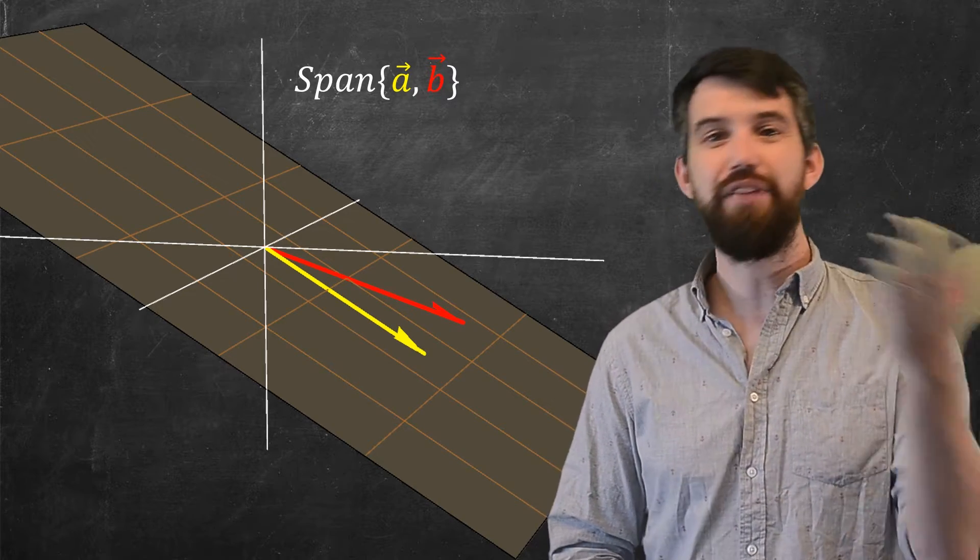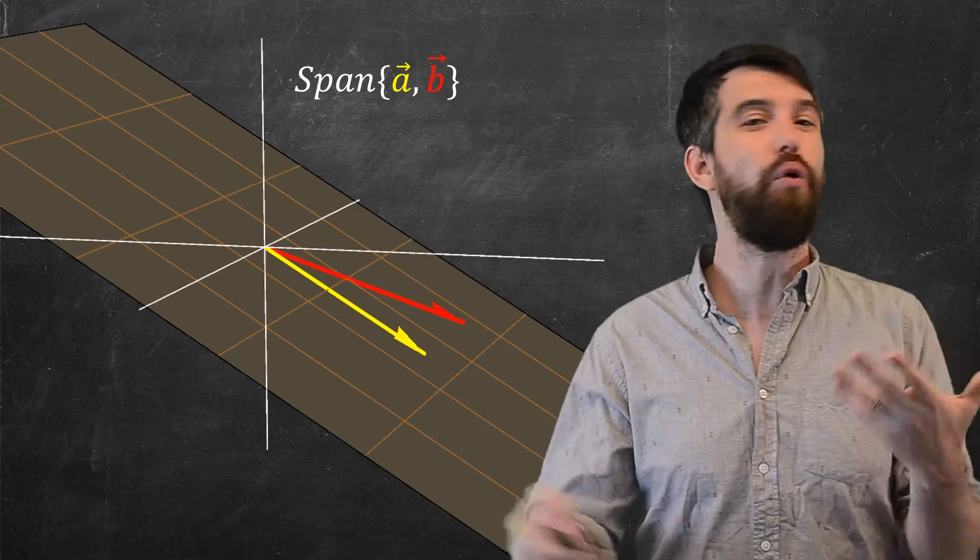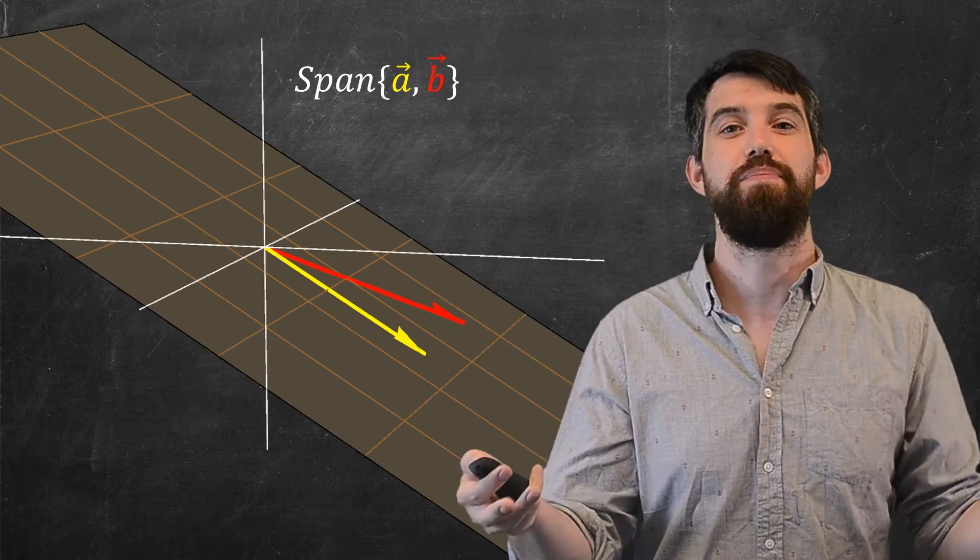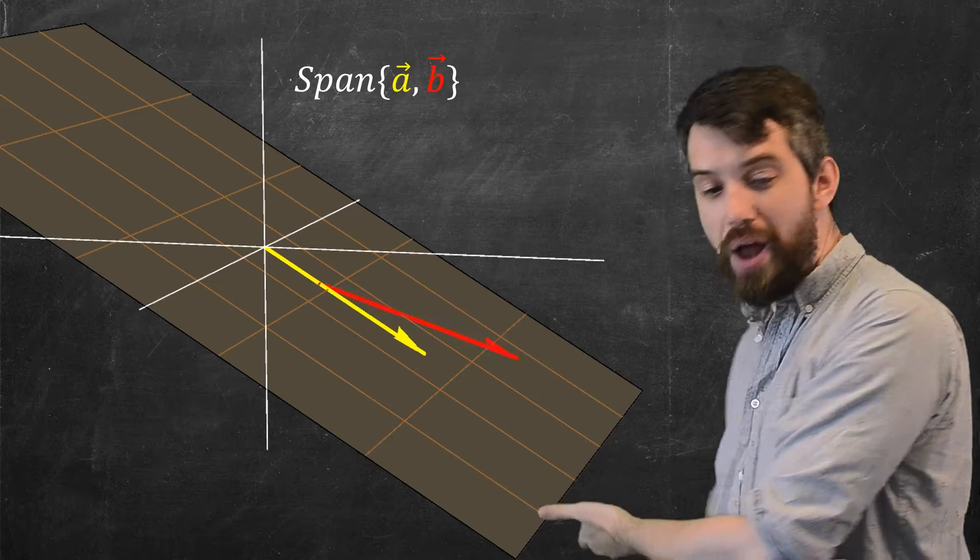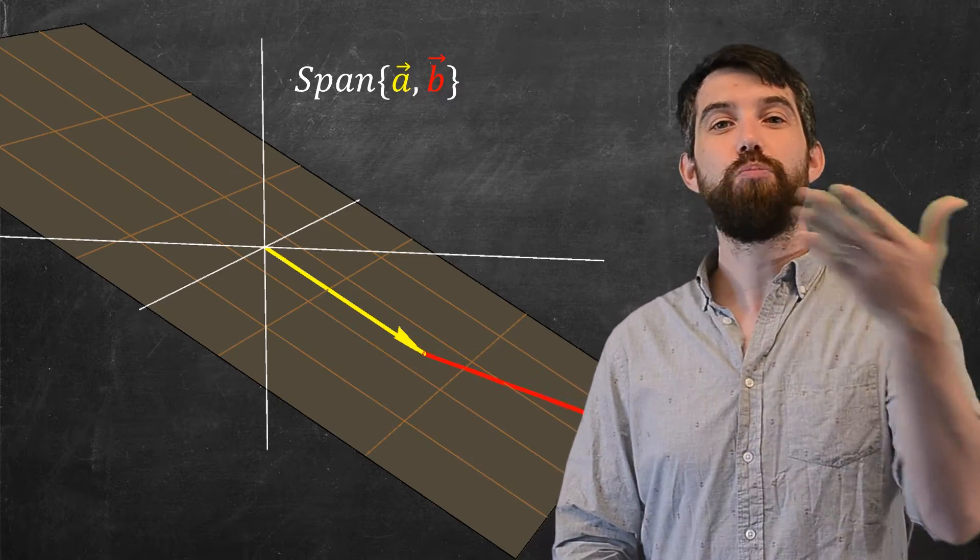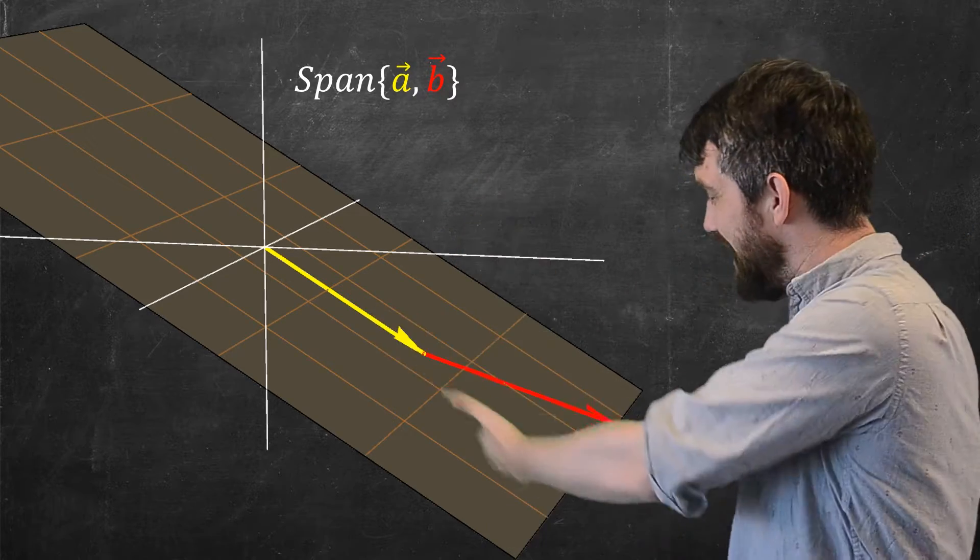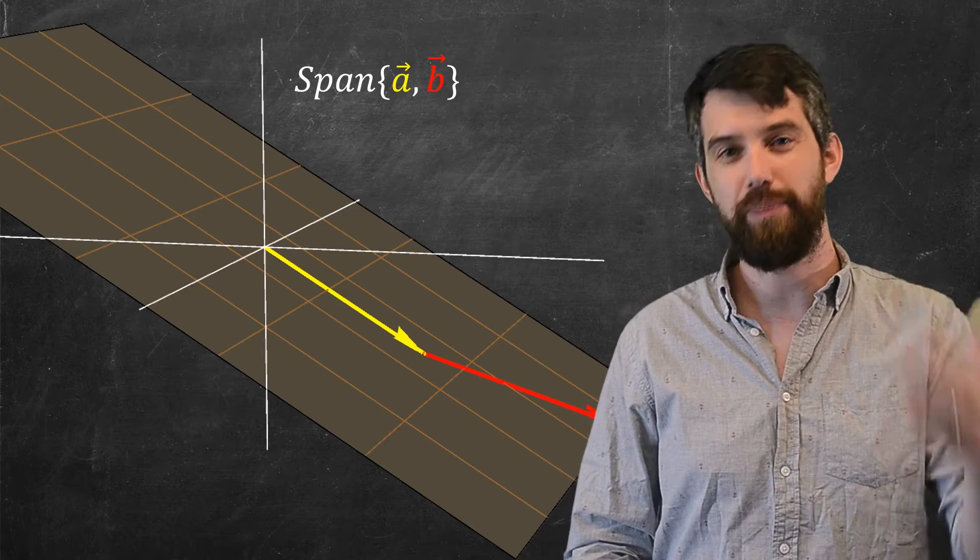Now, what is the span of A and B? Well, the span of A and B is all the ways I can take a linear combination of A and B. So why don't I look at just this one here, which is A plus B, and I'll add it up tip to tail, and you can sort of visualize that it's ended up back on the plane.